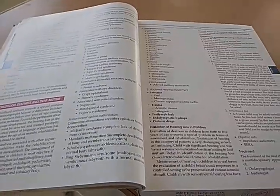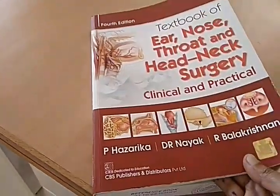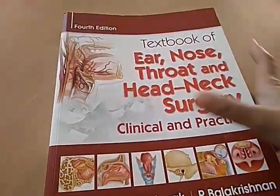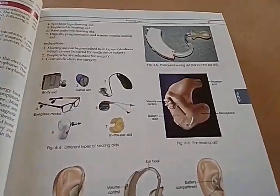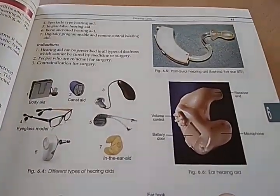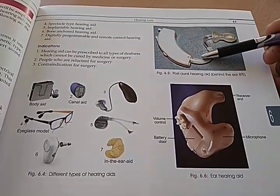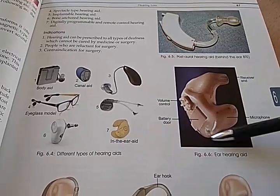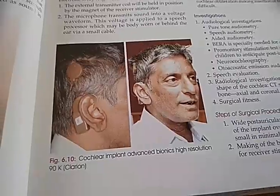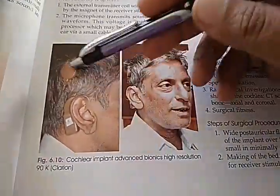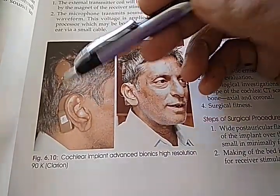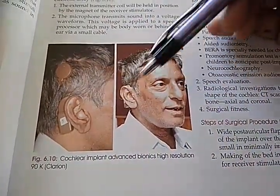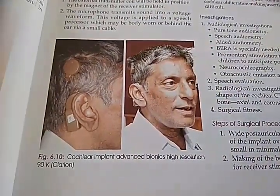How is this book going so far, guys? This is also showing the clinical and practical part. Here you can see different types of hearing aids, including post-aural hearing aids. And this one is a cochlear implant — Advanced Bionics, high resolution 90K Clarion.